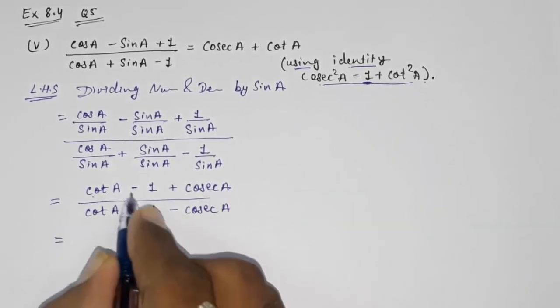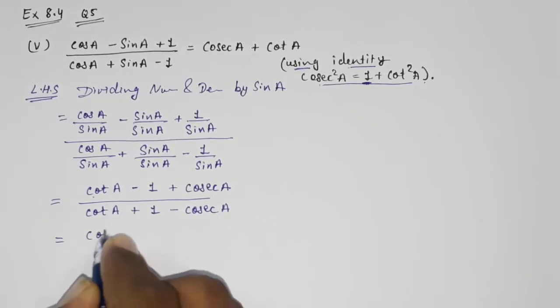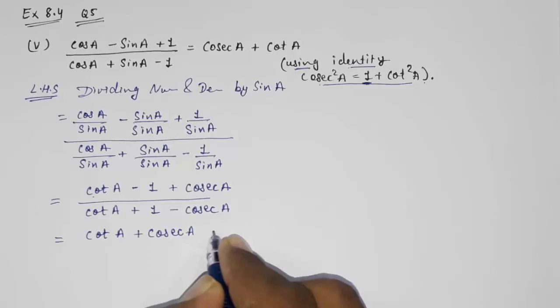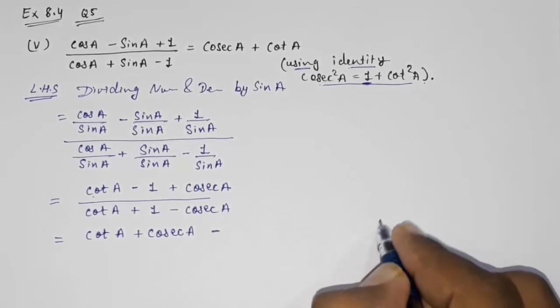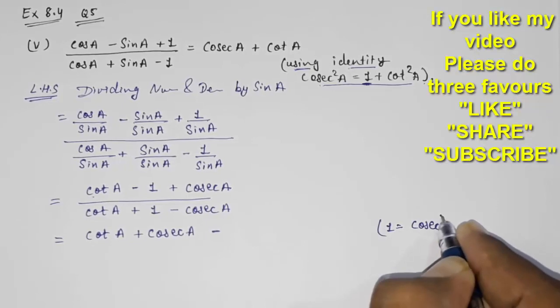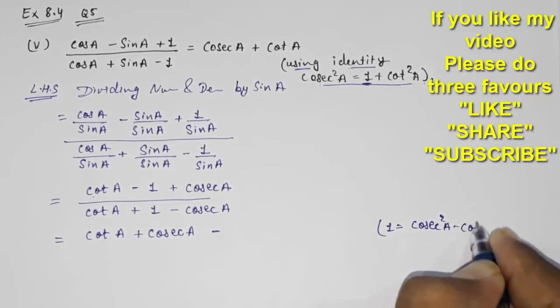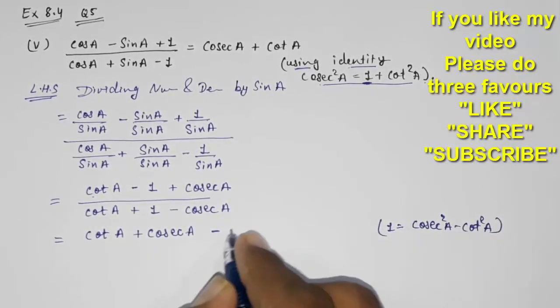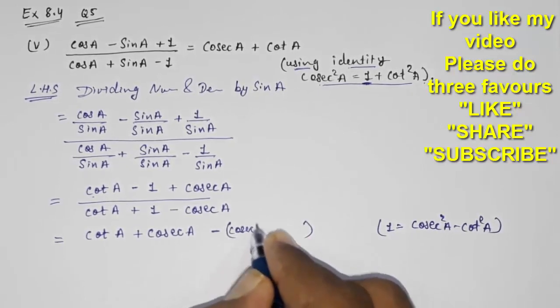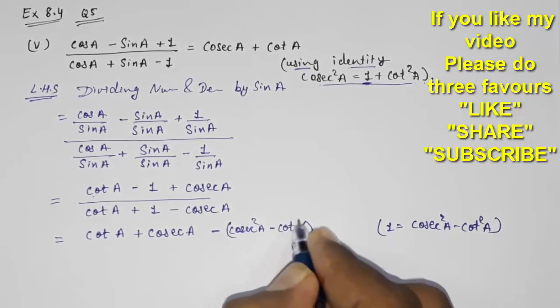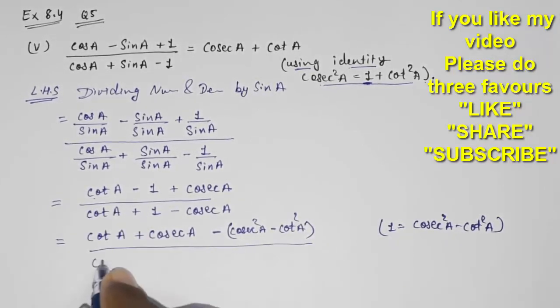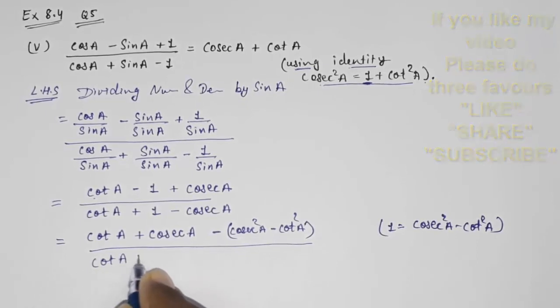Look here, first of all I am going to take this one at the last, means cot A plus cosec A minus 1 is there, right? So we know 1 equals cosec²A minus cot²A, so instead of that place, I am going to write cosec²A minus cot²A.